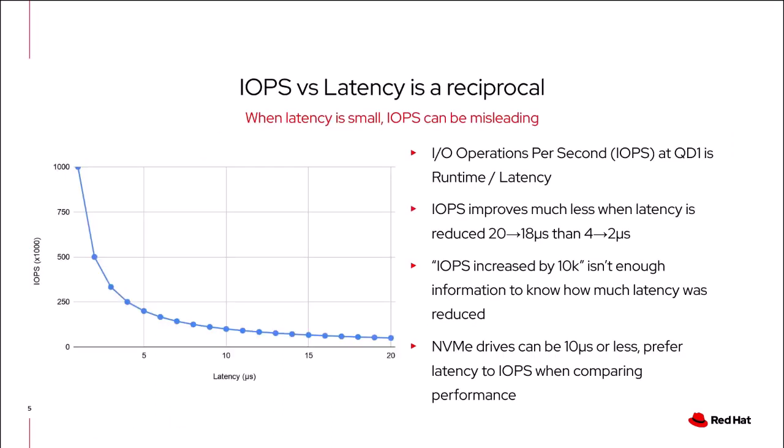Let's have a look at the relationship between IOPS and latency — this is the critical thing that drives the rest of this presentation. IOPS is the number of operations per second. Here I'm showing a simple model of doing one operation at a time, and the relationship is just the total runtime divided by the latency, which gives us the number of operations we can complete in that runtime.